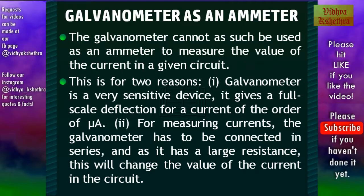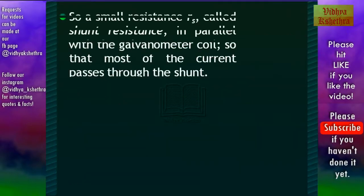So these limitations of the moving coil galvanometer can be overcome by using a small resistance of value rs which is called the shunt resistance in parallel with the galvanometer coil. Since the shunt resistance is very small, majority of the current passes through the shunt.